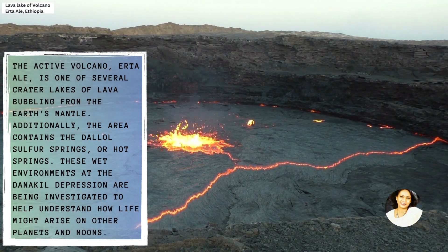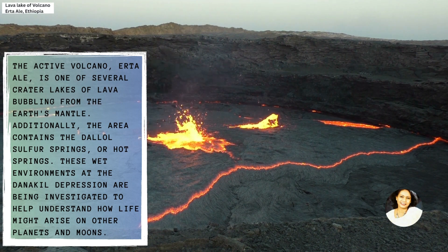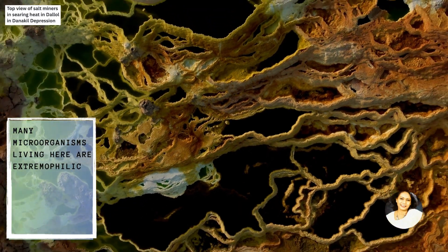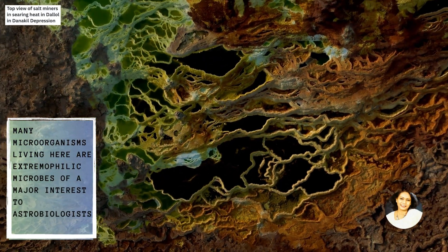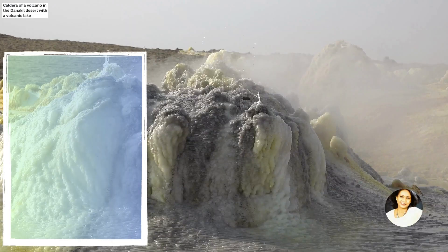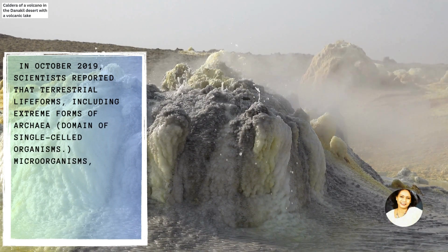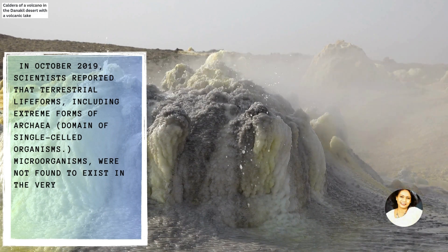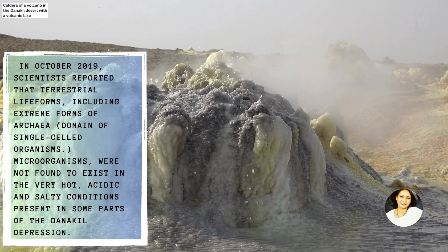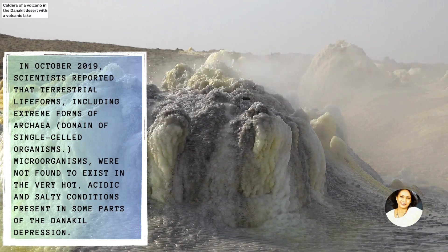These wet environments at the Danakil Depression are being investigated to help understand how life might arise on other planets and moons. Many microorganisms living here are extremophilic microbes of major interest to astrobiologists. In October 2019, scientists reported that terrestrial life forms, including extreme forms of archaea — that is, single-celled microorganisms — were not found to exist in the very hot, acidic, and salty conditions present in some parts of the Danakil Depression.